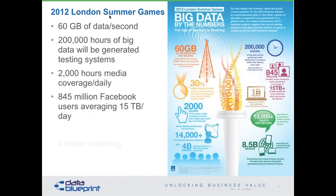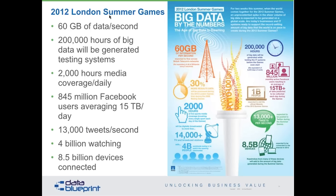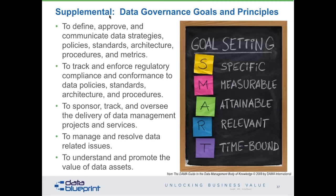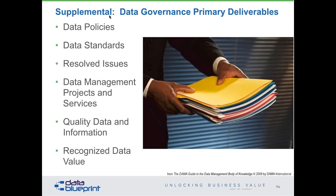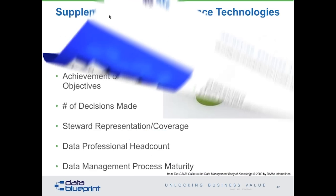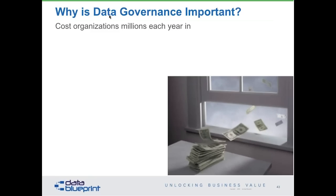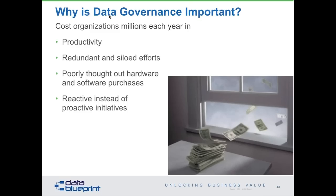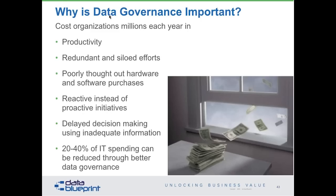The London Summer Olympics had more devices connected to it alone than there are people on the planet. There's a lot of supplemental material here — deliverables, lists, roles and responsibilities — for you to take away. What are we trying to do with governance? The answer is that bad data and bad data management practices cost organizations millions in productivity, in redundant and siloed efforts, and poorly thought-out hardware and software choices. Organizations are spending their time being reactive instead of proactive. Our measurements show that between 20 and 40 percent of all IT costs can be reduced through better spending in the governance area.